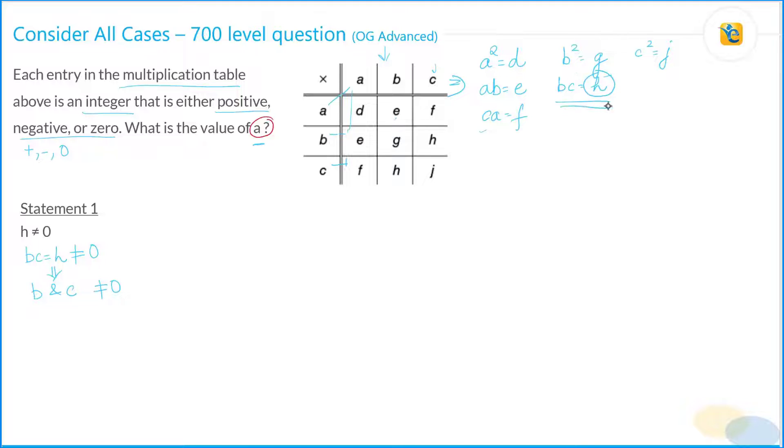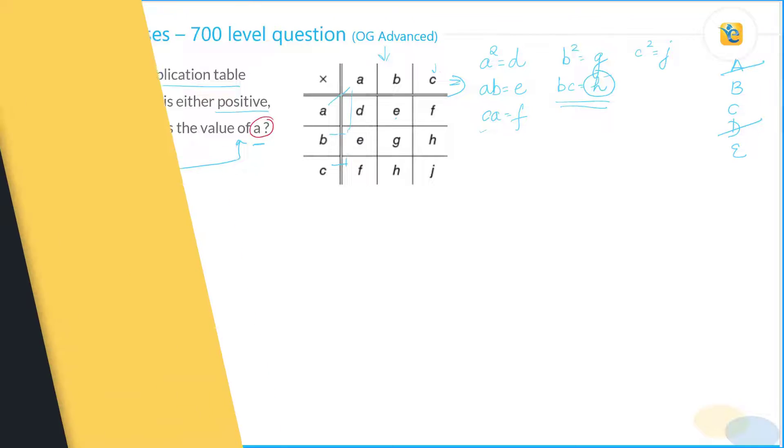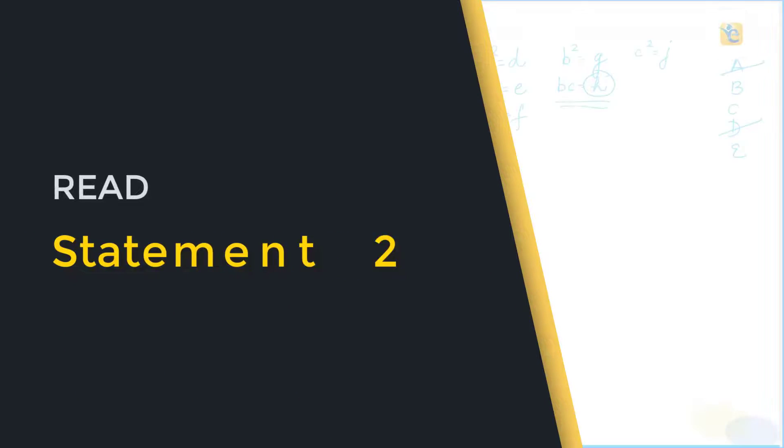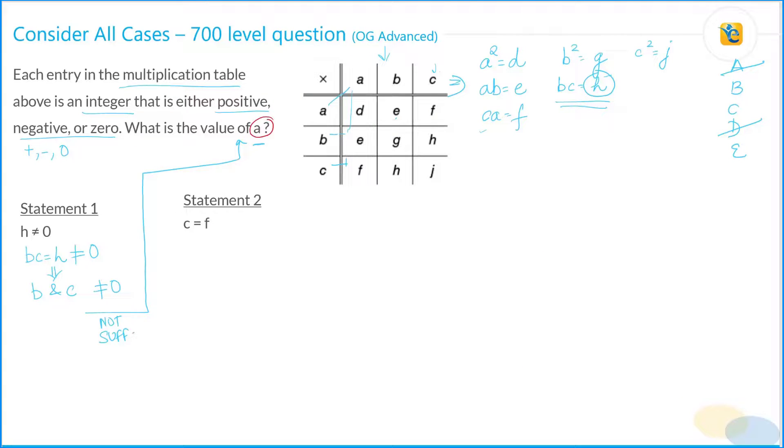But does it give us any information about a? Not really, because h appears only with b and c. There's no other linkage with a that can give us a value of a, which means that this information is not sufficient to find out the value of a. So this is not sufficient. Now let's create our answer choices here: A, B, C, D, and E. A is not an option, D is not an option.